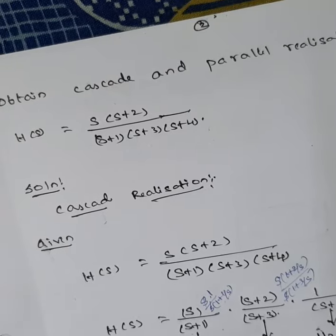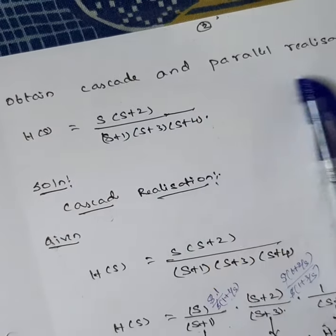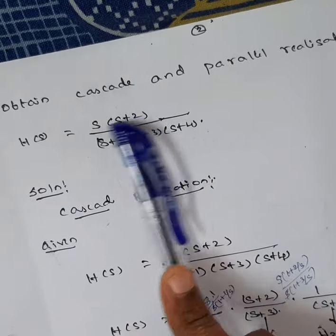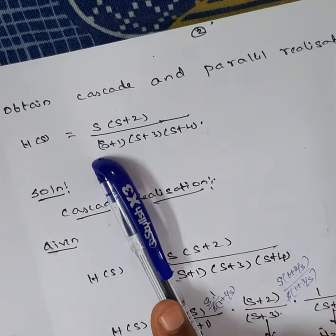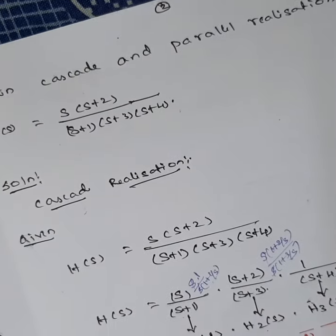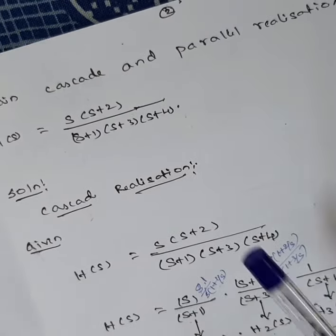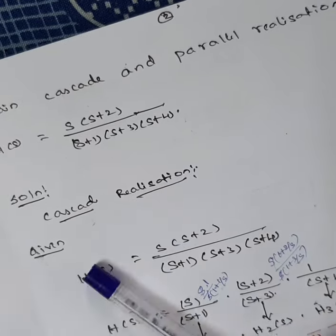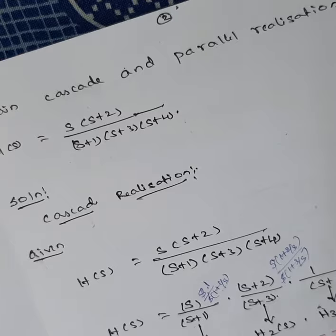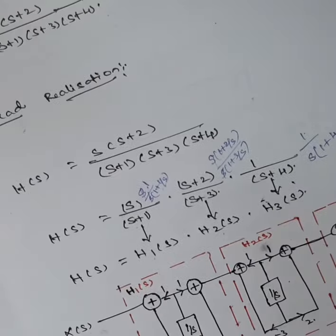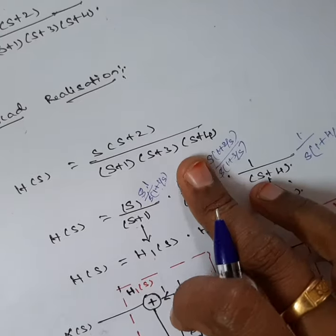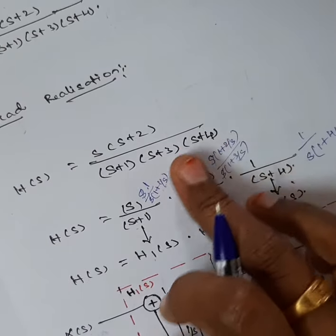The next question asks to obtain a cascade and parallel realization for H(s) = s(s+2) / [(s+1)(s+3)(s+4)]. For cascade realization, we want to draw the structure in series manner.